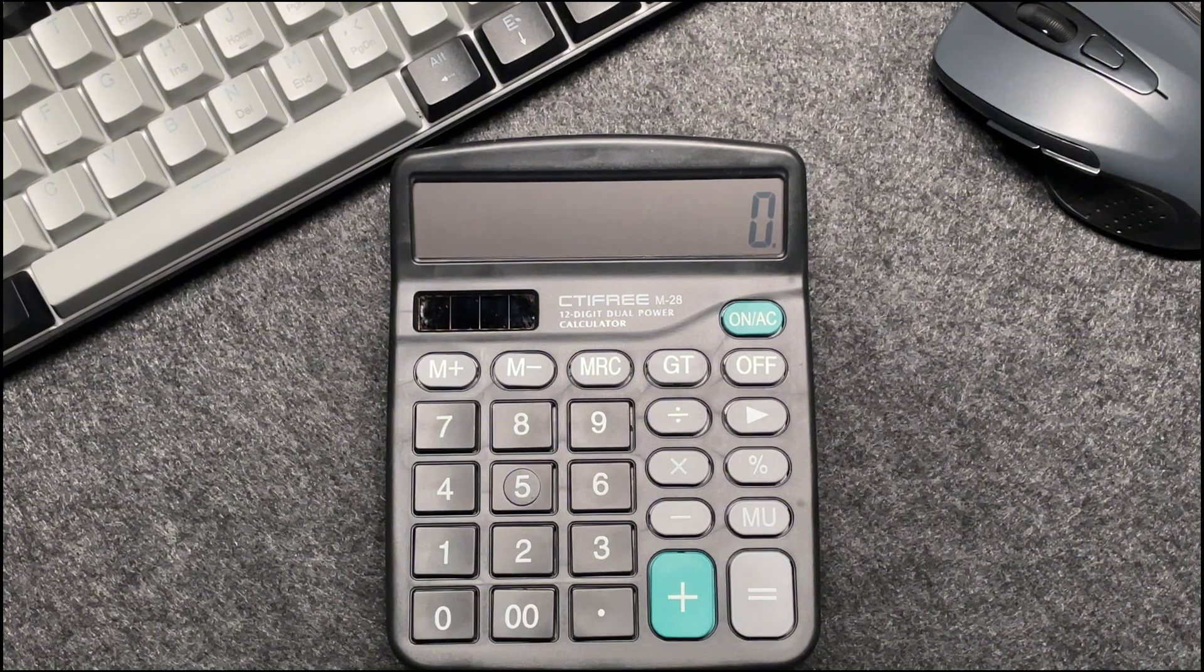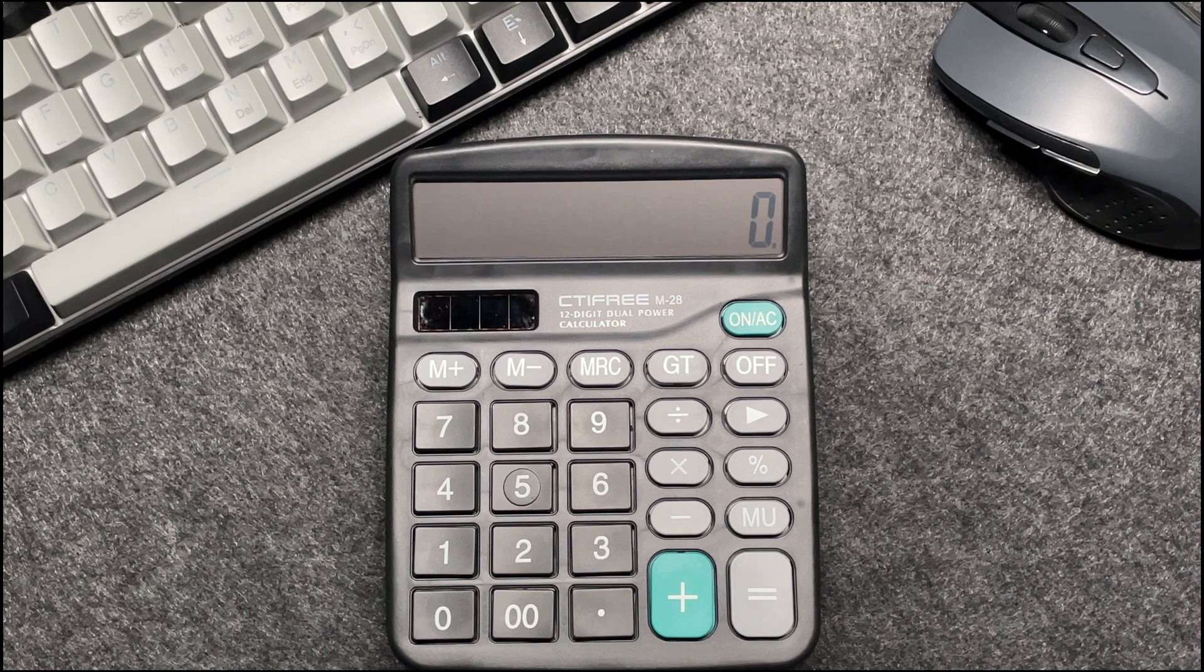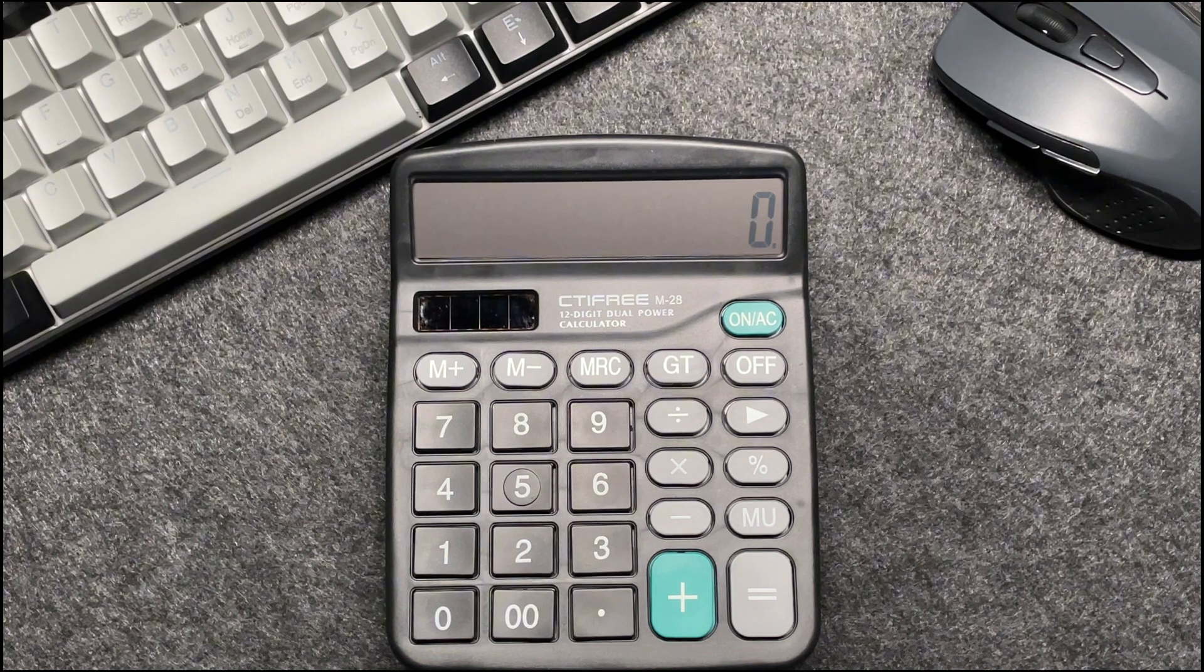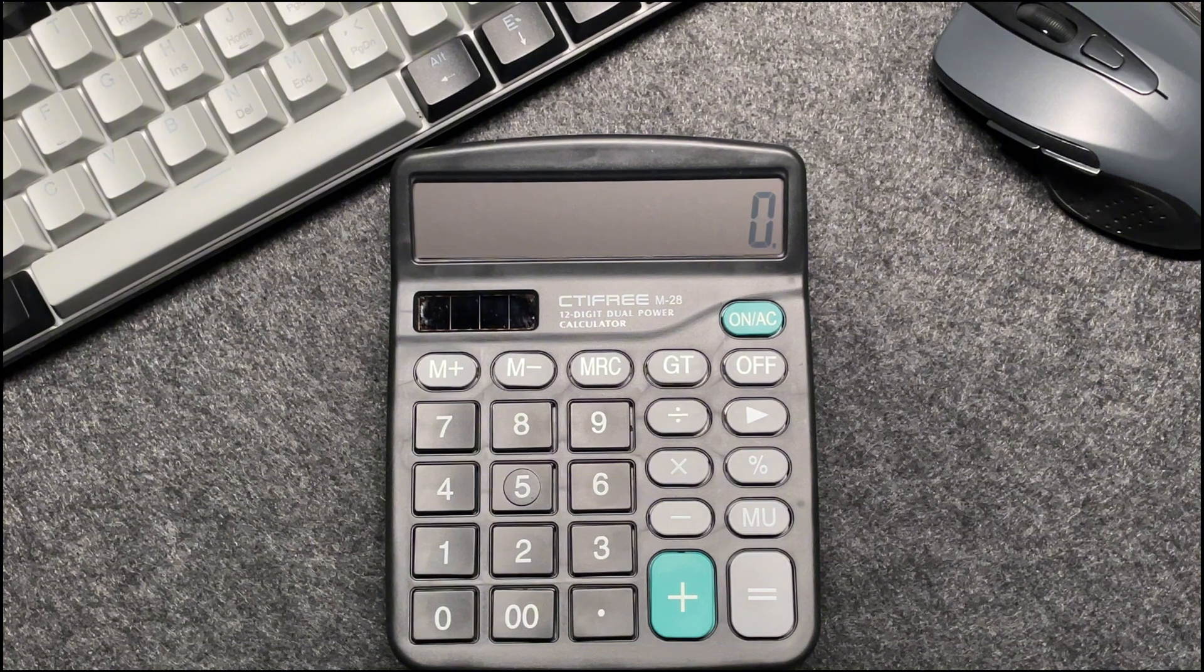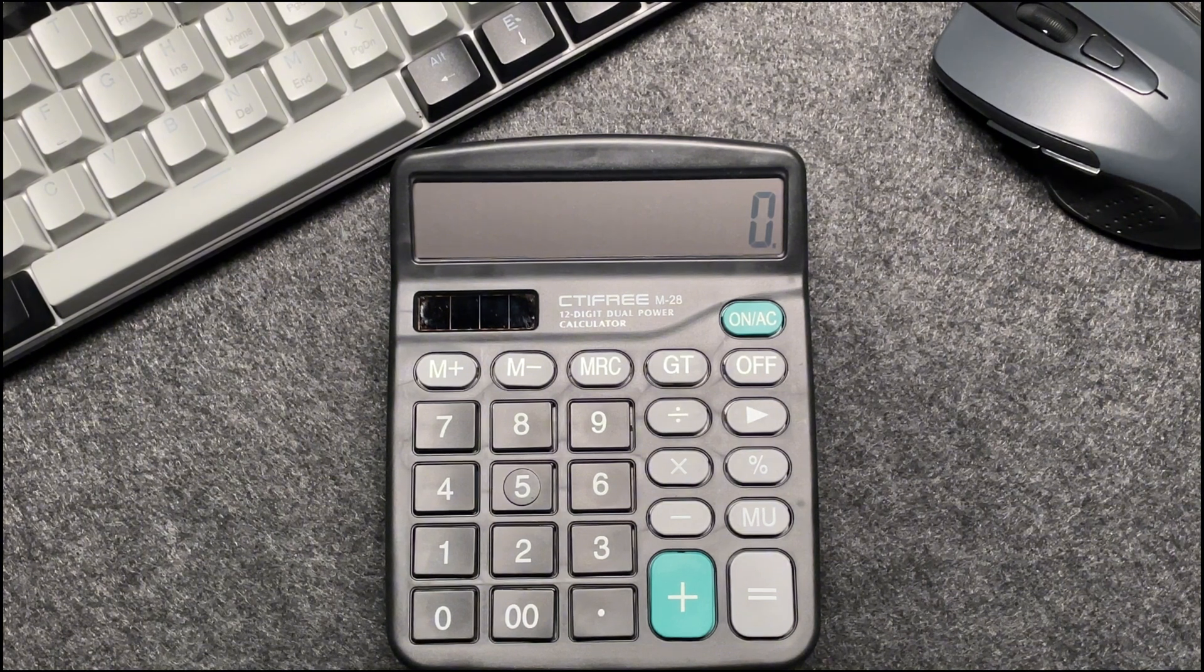Alright, let's start with an example. Suppose you have an item that costs $1,357 and you want to find out what the final price will be after applying a 45% discount. Here's how you do it in just three easy steps.